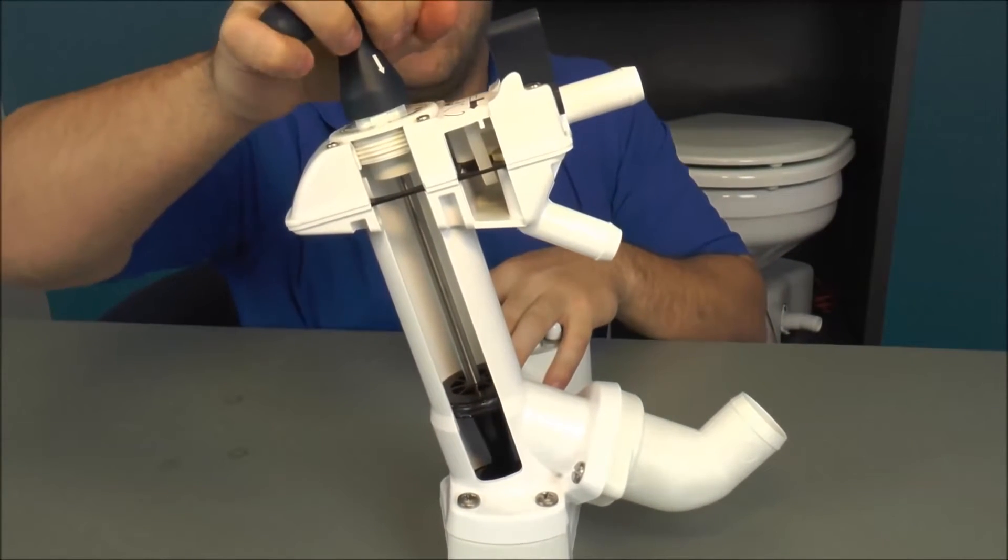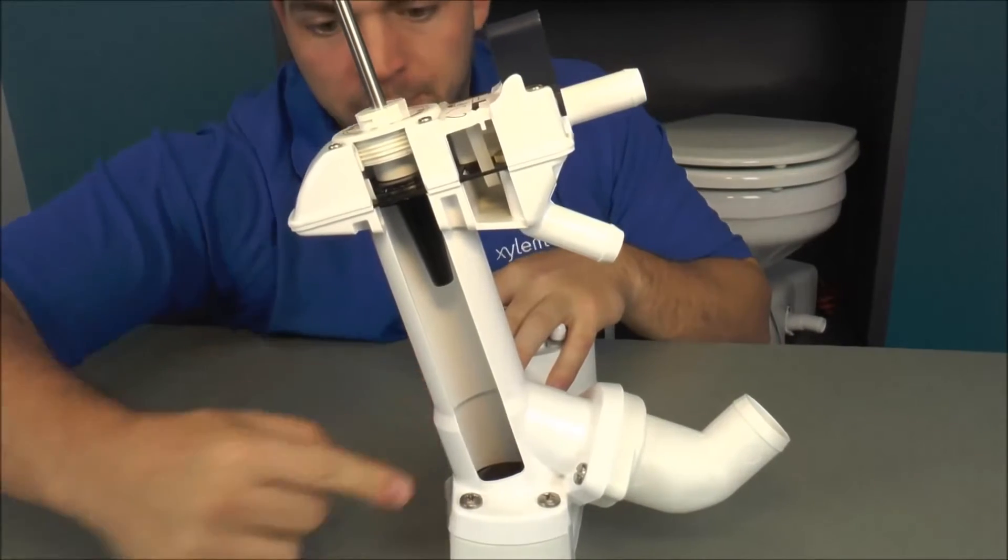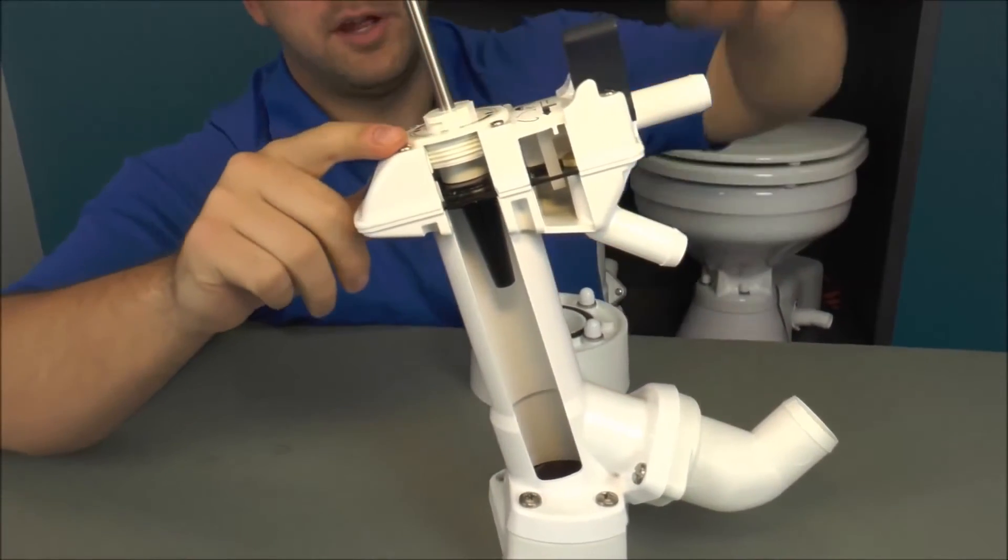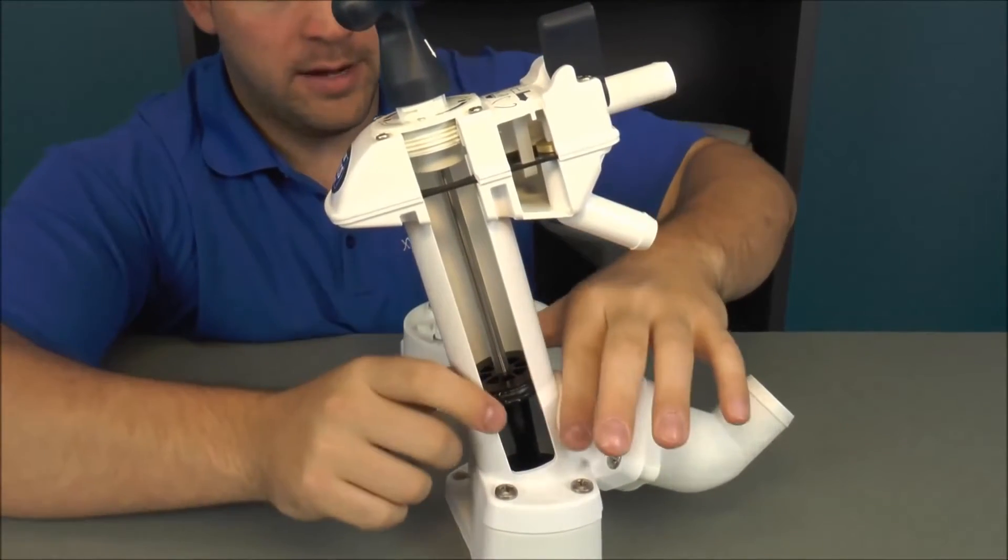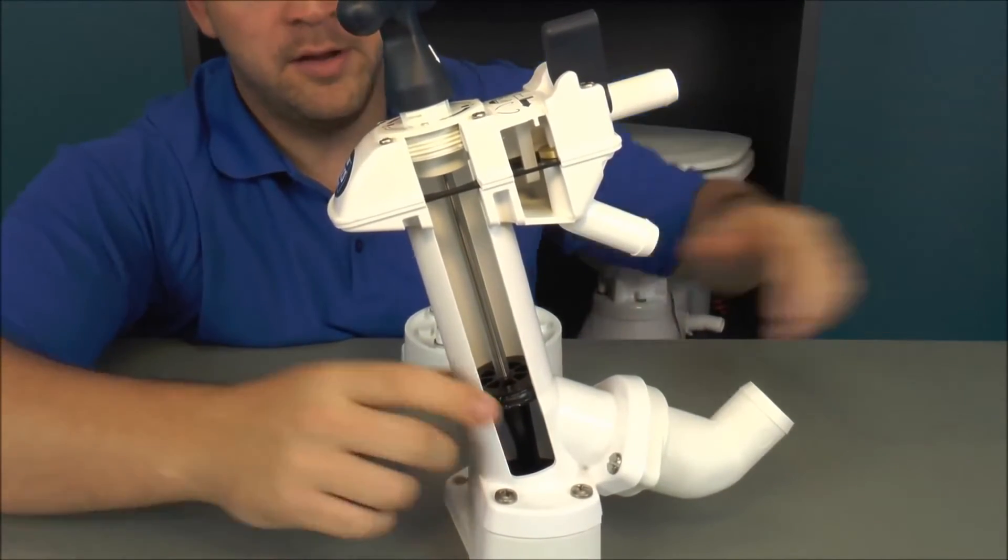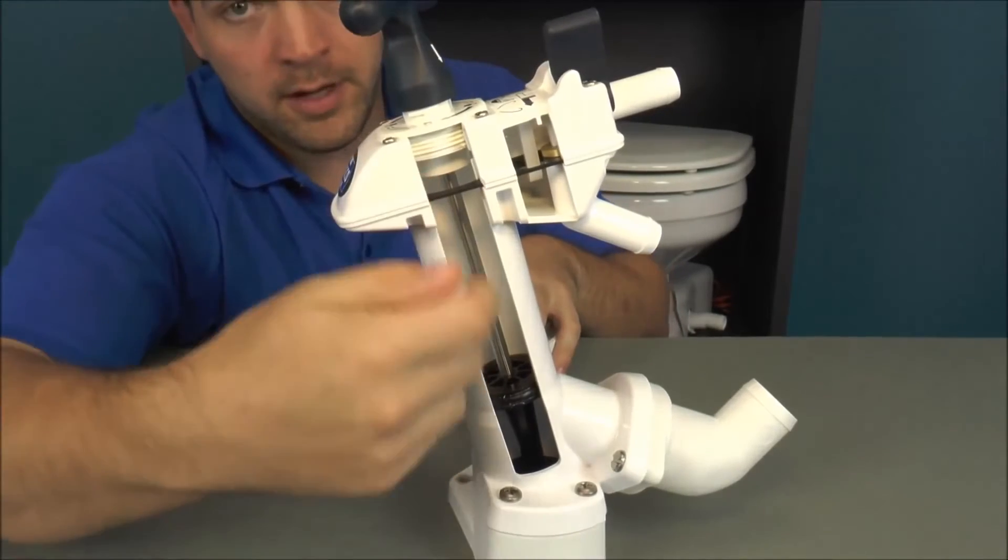So when I lift up on the pump handle, this fills the pump chamber with waste and expels air into the bowl. When I push down, this pushes the waste out of the cylinder into your discharge hose line and brings in air into the cylinder.